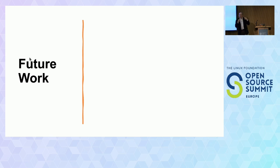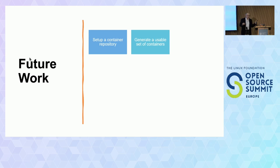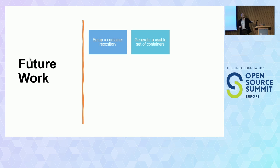That was about it for the content in terms of the demos. Future work to make this more usable: setting up some kind of container repository. Docker makes it very easy to host your own, and then figuring out what a usable set of containers would be for any particular application stack. Docker Hub obviously has everything in the world, but if you're going to be building with OpenEmbedded you're probably not going to have nearly that many things. BitBake World is probably a bit more than you want as well, so you've got to kind of balance that based on your application needs.